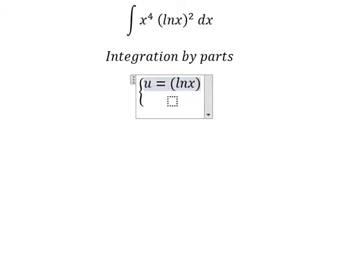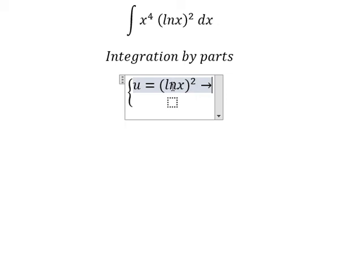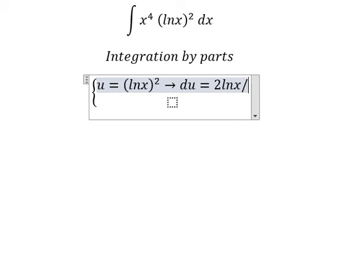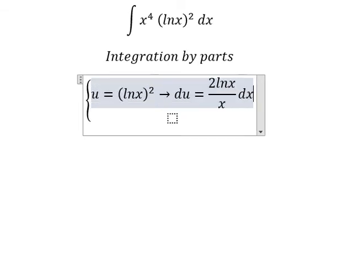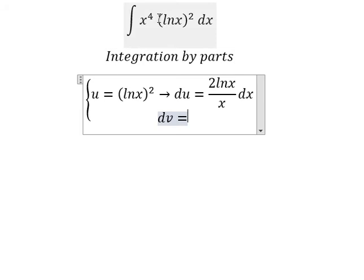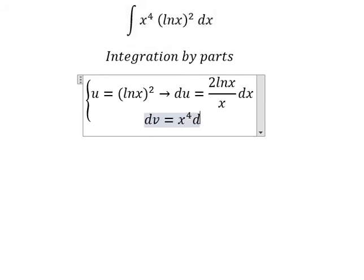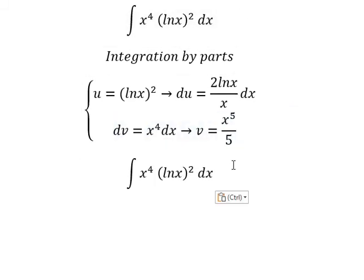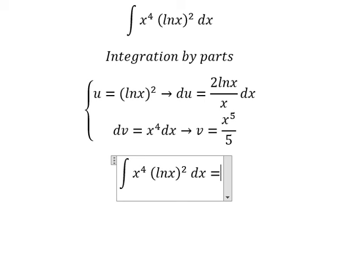Later we do the first derivative for both sides, and we have 2 ln x over x dx. For dv, we have x to the power of 4 dx. The integration of this one gives us v equals to x to the power of 5 over 5.